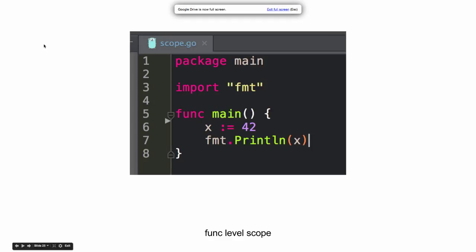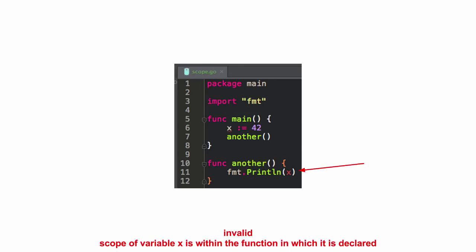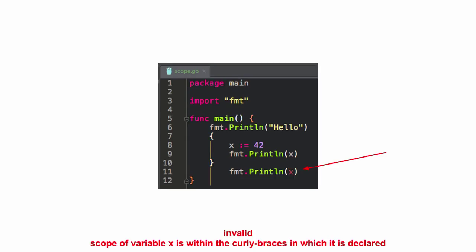Function level scope — you can't do this. So in JavaScript you have hoisting, which brings all your function declarations and variable declarations up to the top, but not your assignments. You can't do that in Go. It runs sequentially, top to bottom. And here we have function level scope — that's pretty straightforward, that's invalid. And here we have curly braces level scope — I wouldn't be able to access X outside those curly braces, so that doesn't work.